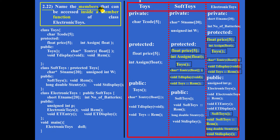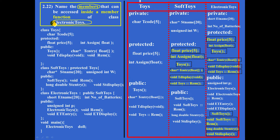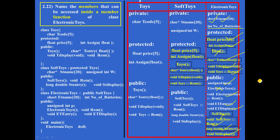Question 2.22: Name the members — both variables and functions — that can be accessed inside a member function of class electronic toys. Inside a member function means the whole class. All members include variables and functions of class electronic toys. Altogether, fourteen members are there, combining all the data members and member functions identified in the previous two questions.